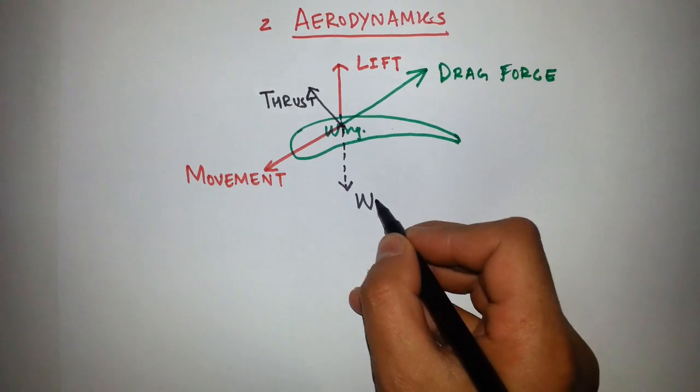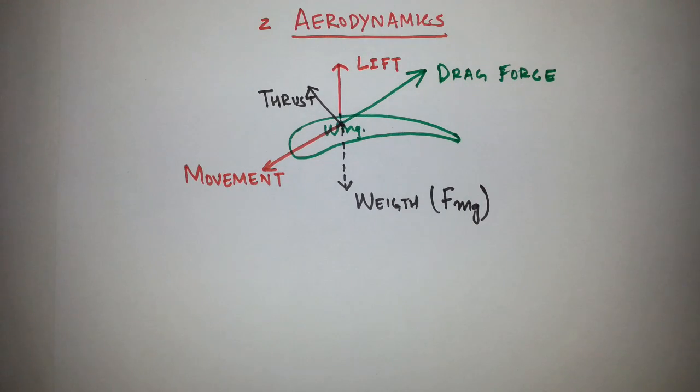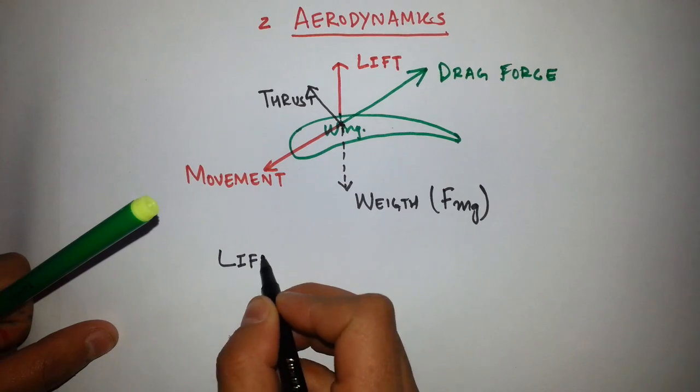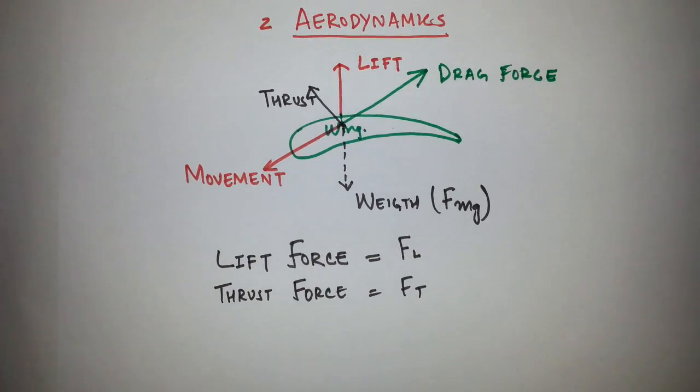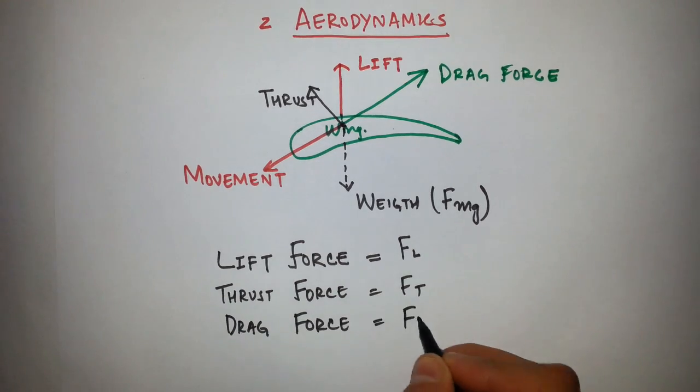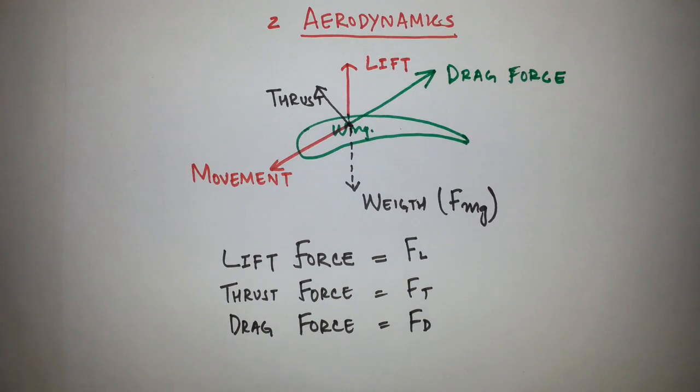We see the force due to gravitation, universally denoted by Fmg; lift force denoted by FL; thrust force denoted by FT; drag force denoted by FD; and gravitation force, which is denoted by Fg.